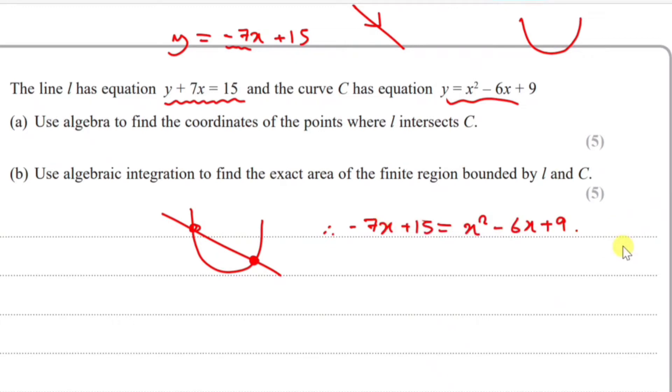So adding 7x and minus 15, we have 0 = x² + x - 6. That's -6x + 7x which is x, and 9 - 15 which gives us -6.